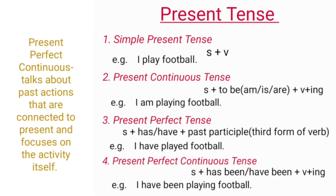And example is 'I have played football.' Present perfect continuous tense also talks about the past actions that are connected to present, but it focuses on the activity itself. Its structure is Subject plus 'has been' or 'have been' plus verb plus -ing. An example is 'I have been playing football.'